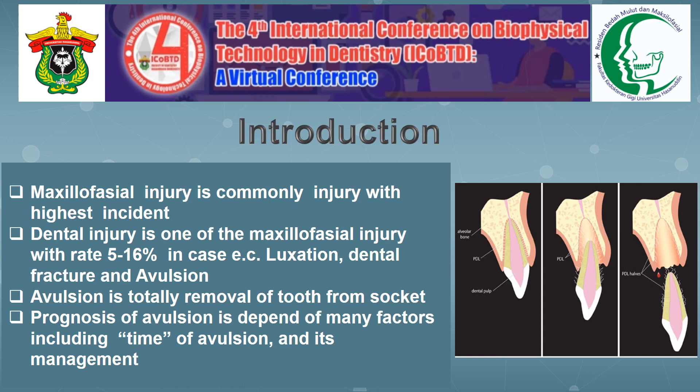Avulsion is a complete removal of the tooth from the socket by rupture of the periodontal ligament, still leaving a few periodontal fibers in the periodontal ligament and on the cementum and on the alveolar bone.